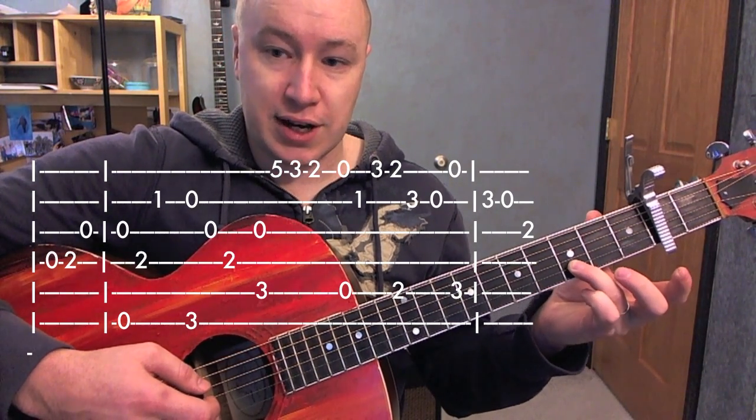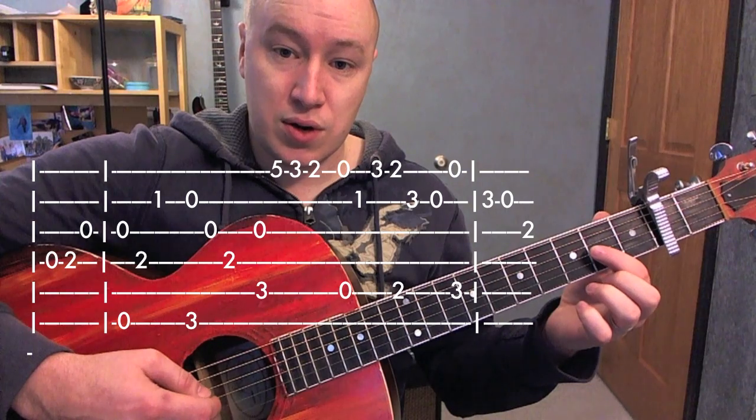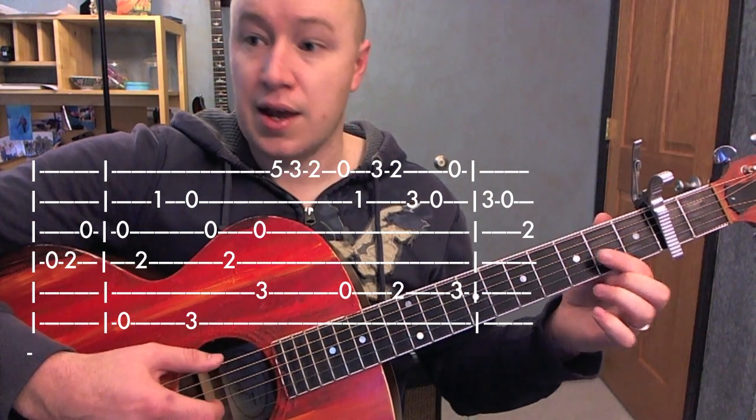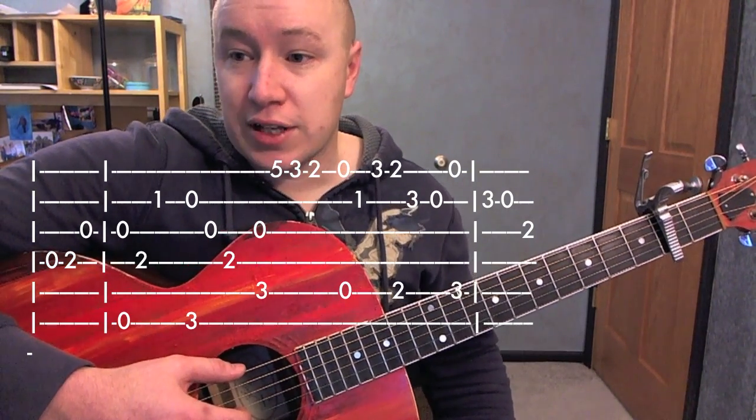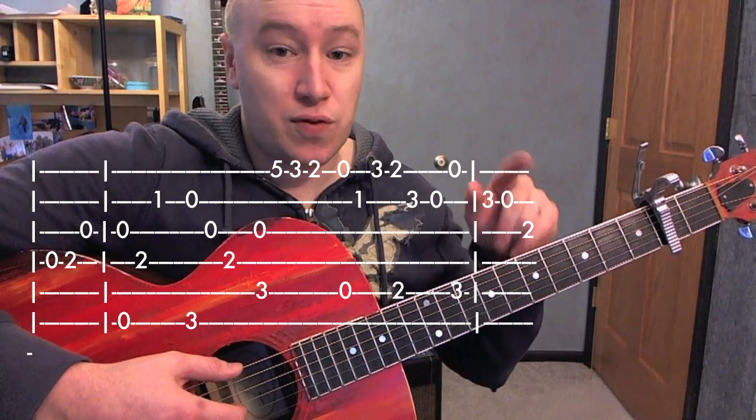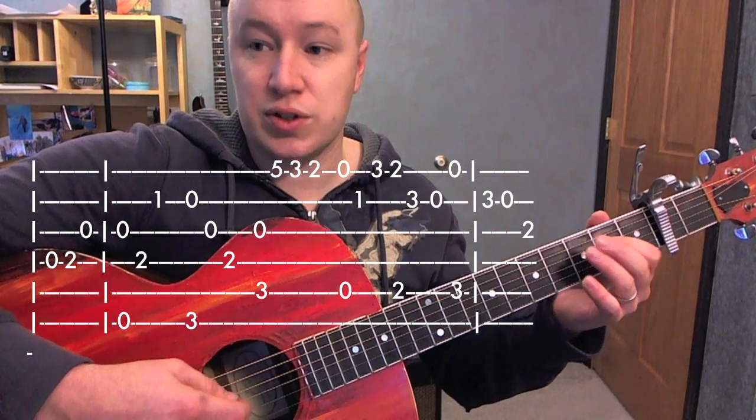Then on the 2nd string, 3, 0, 2. And then it kind of alternates because then it comes back to the 0 and 0, skipping those first 3 notes. That 0, 2, 0.